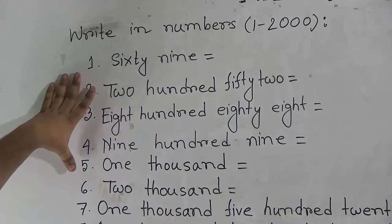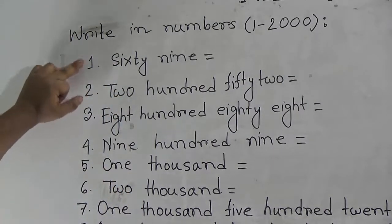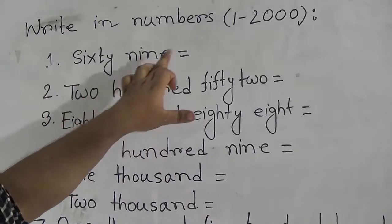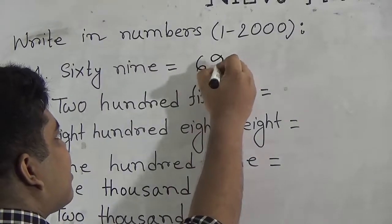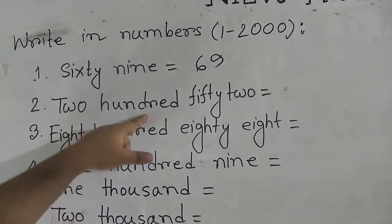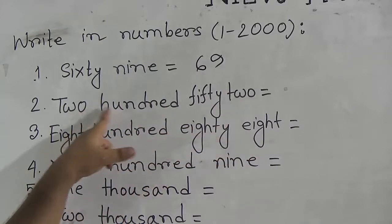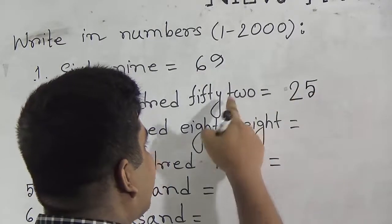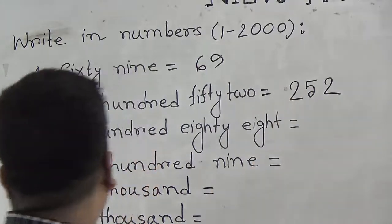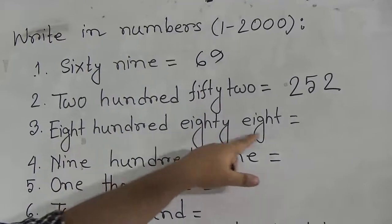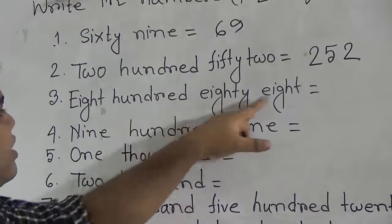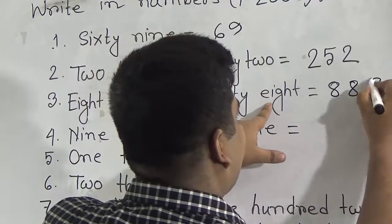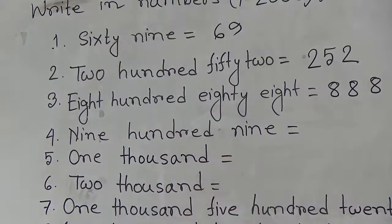We will recall numbers 1 to 1000 with examples. The first number is 69. Our next number is 252 — 200 means 250, 50 means 5, and 2 means 2, so 252. Our next number is 888 — at first we write 800, then 80 that means 8, and 8, so 888.